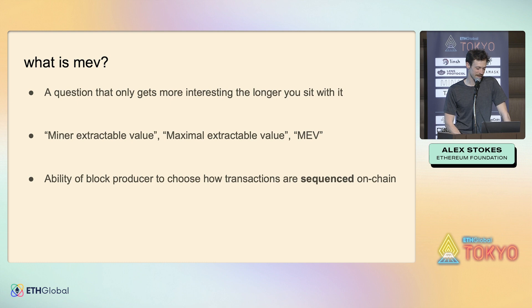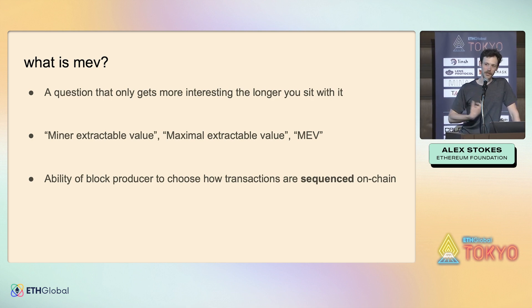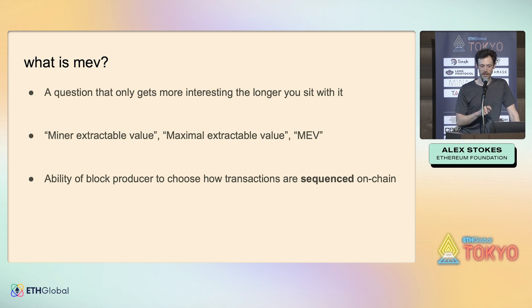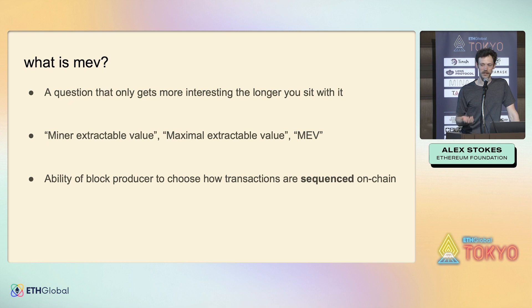So what is MEV? It sort of used to be an acronym and kind of still is. Originally it stood for Miner Extractable Value — miners were the ones determining consensus and making blocks. It turns out that when you go to add a block to the chain, this miner actor had complete freedom to take whatever transactions they saw in the mempool and put them into a block however they chose. Now in the proof-of-stake world, we've gotten rid of miners, so people have tried names like Maximal Extractable Value. Either way, we can just call it MEV.